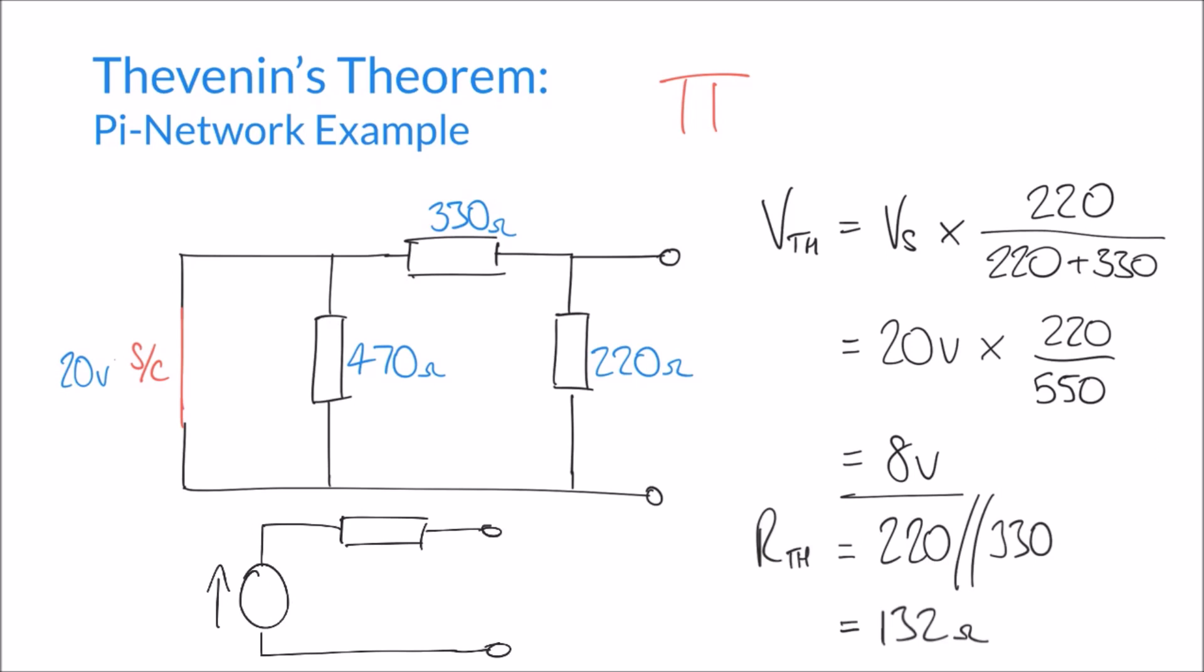And we've said finally that that voltage is 8 volts and this impedance is 132 ohms. So these two circuits here are completely equivalent.